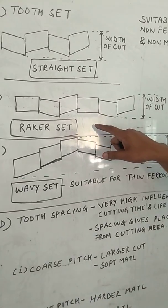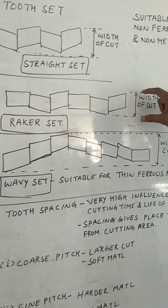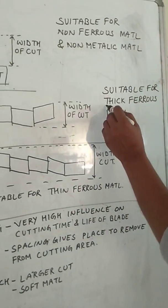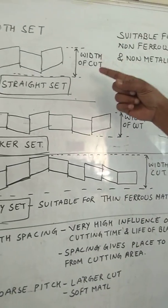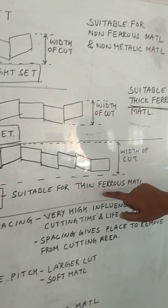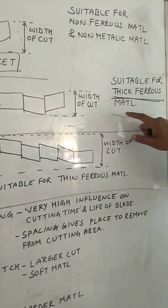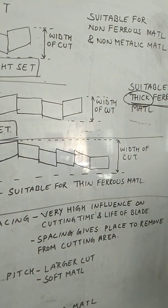Second set is the raker set. The raker set, this is the width of cut and this is suitable for thick ferrous material. For non-ferrous material, this is a straight set. For ferrous material, this is a raker set as well as a wavy set. But this type of raker set form is used for the thick material, thick ferrous material.